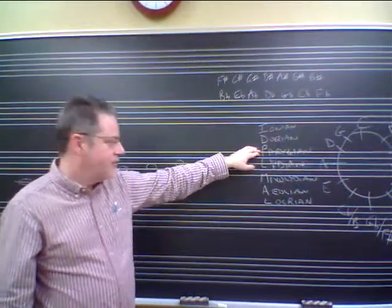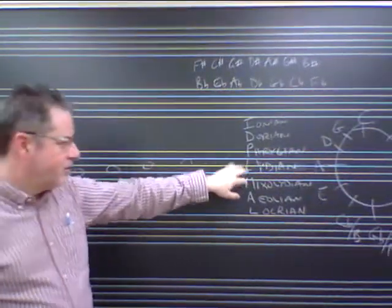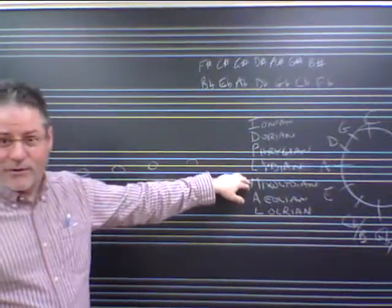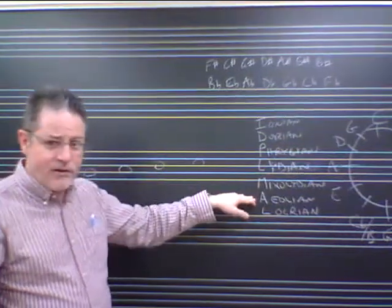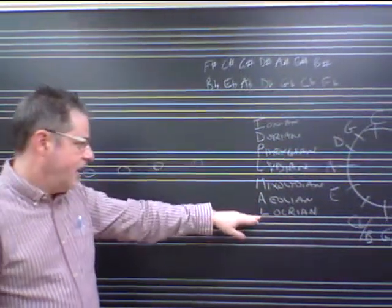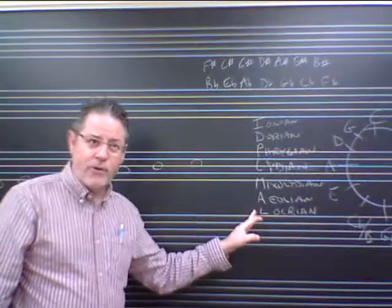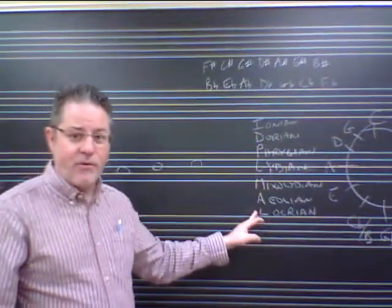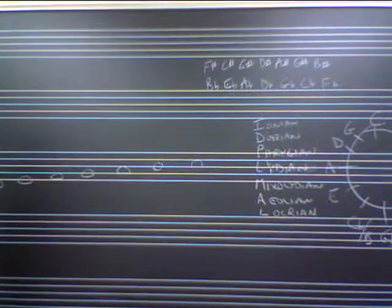Phrygian is like a natural minor with a lowered second. Lydian is like a major with a raised fourth. Mixolydian is like major with a lowered seventh. Aeolian is like a natural minor without any alterations. And Locrian is like a natural minor with a lowered second and a lowered fifth.